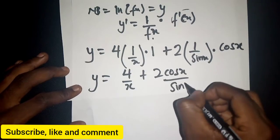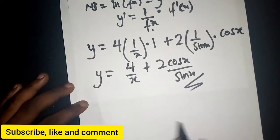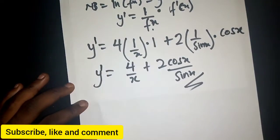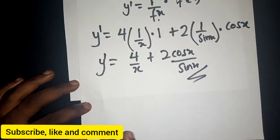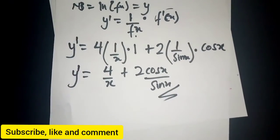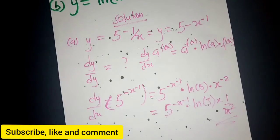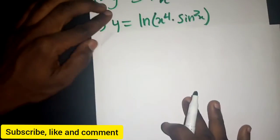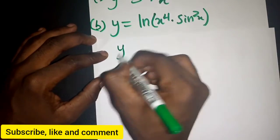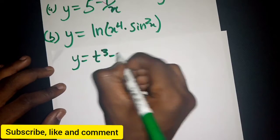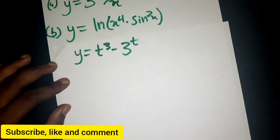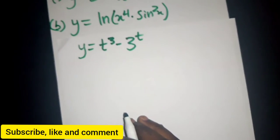Therefore dy/dx for part B equals 4/x plus 2cos(x)/sin(x). That is what we have for part B. Now let's look at the last part. For part C, y equals t³ times 3^t.